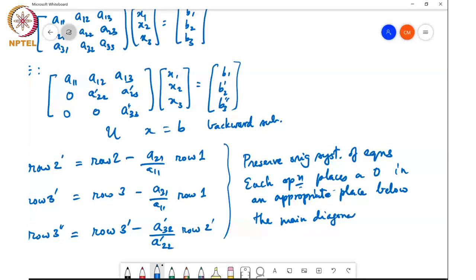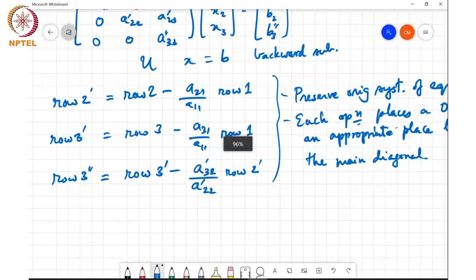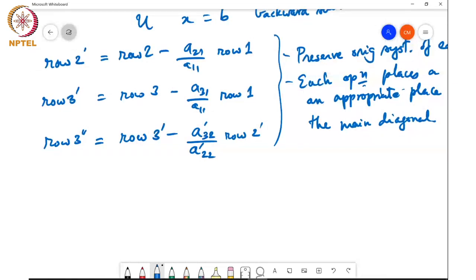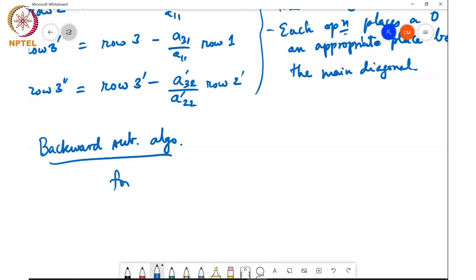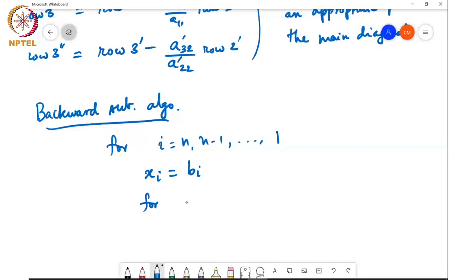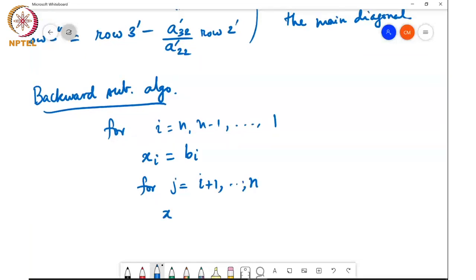Okay so basically once a is triangularized we can obtain the solution by backward substitution. So here is the backward substitution algorithm just for the sake of completeness I have already explained what it is. So for i equal to n n minus 1 down to 1 what you do is you set x i equals b i and then for j equal to i plus 1 to n we set x i equal to x i minus u i j times x j, and finally x i over u i i.